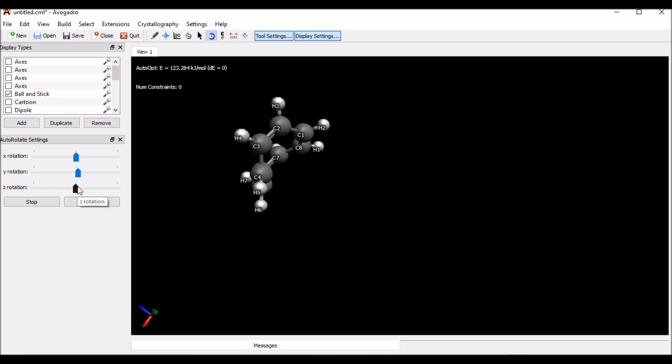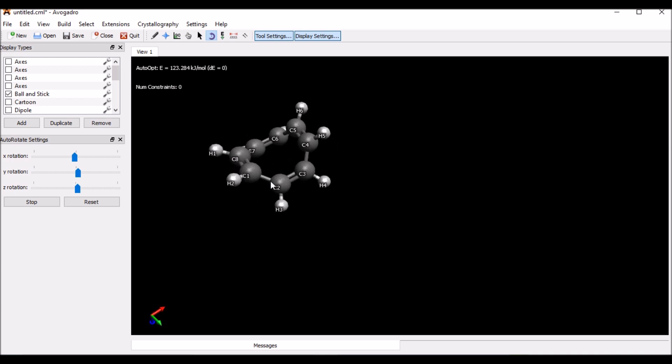Now you can see it is acquiring a tub shape. So it has acquired a proper tub shape as we discussed in the slides. After optimization, it is not planar and it is having a tub shape. This is how you will understand the concept of planarity. You can visualize it clearly using your Avogadro software.